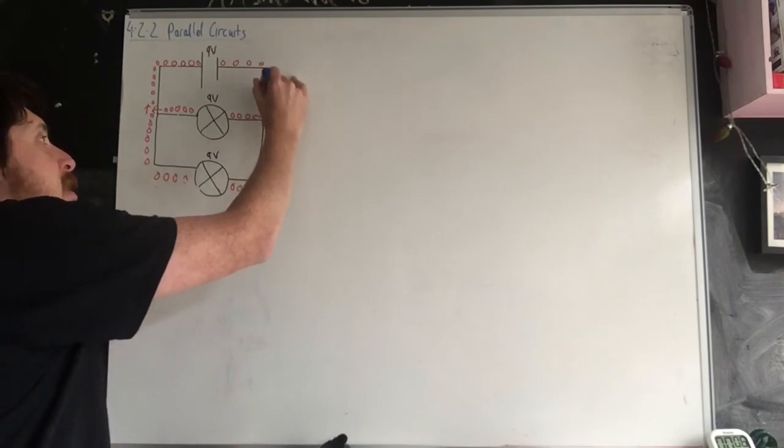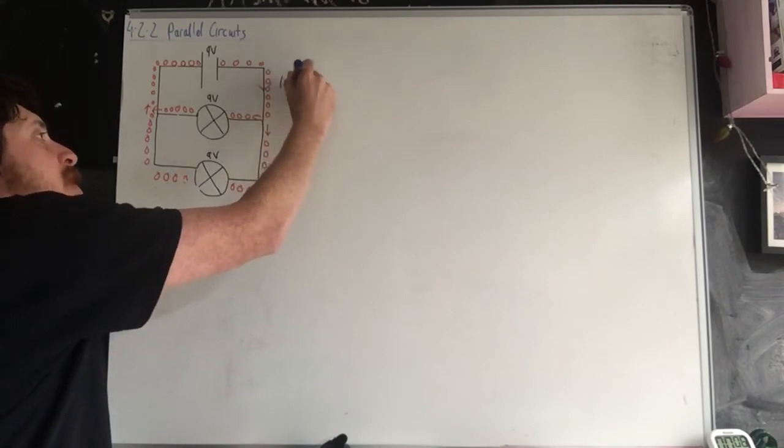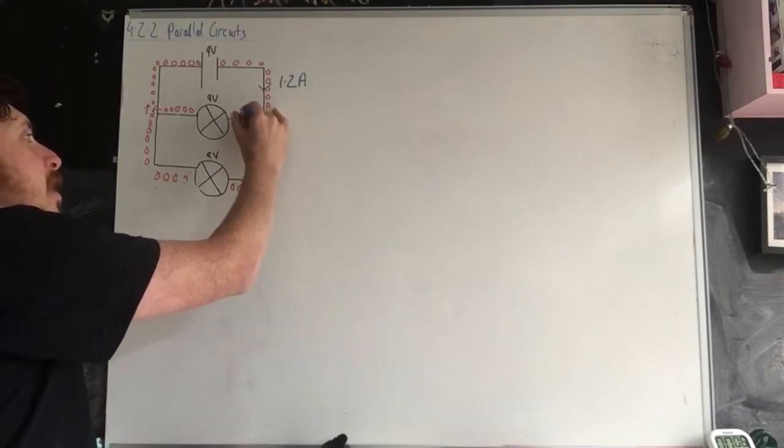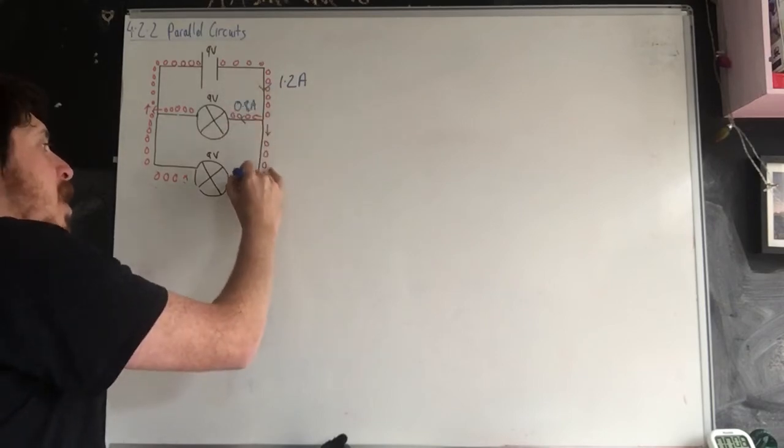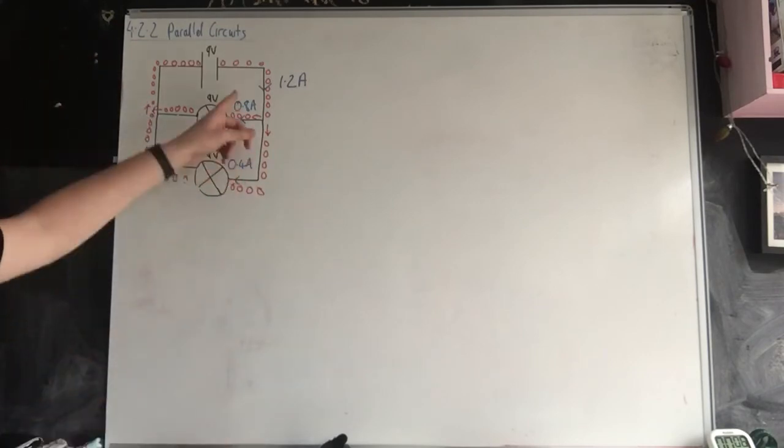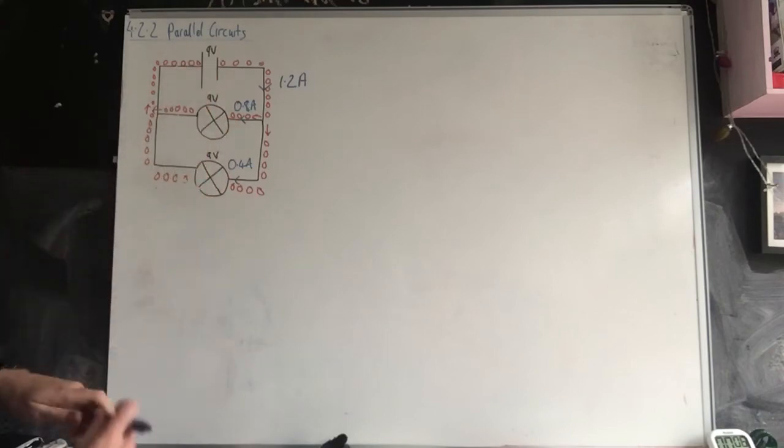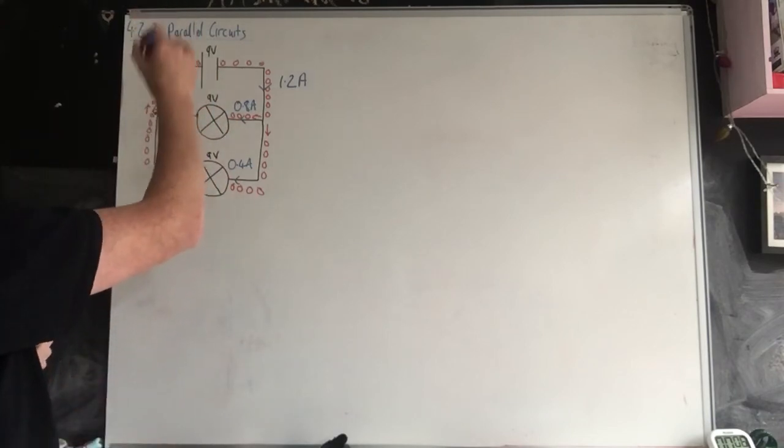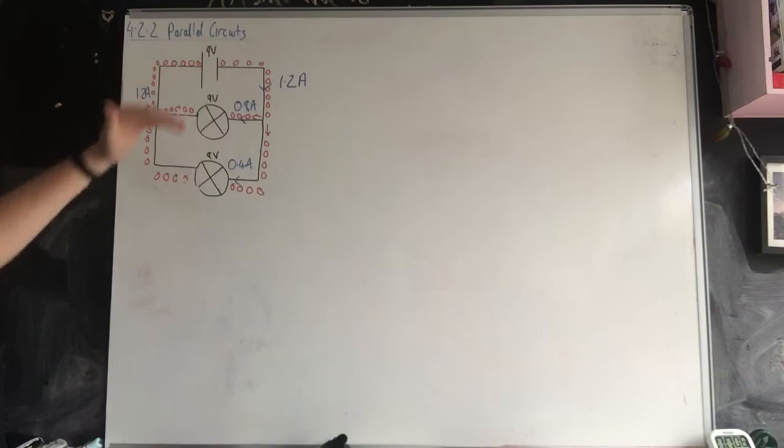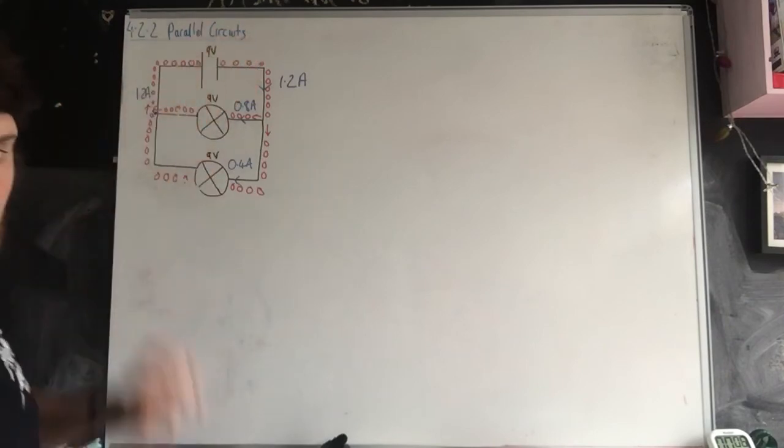So let's say that we have 1.2 amps worth of current flowing around a circuit. Then we may have 0.8 amps going up there and 0.4 amps going there. It does not have to split evenly. So here and here you've got a different amount of current, and when they recombine at this point, then you've got 1.2 amps again in that segment up there. So your rules are: voltage is the same across each branch and the current splits.